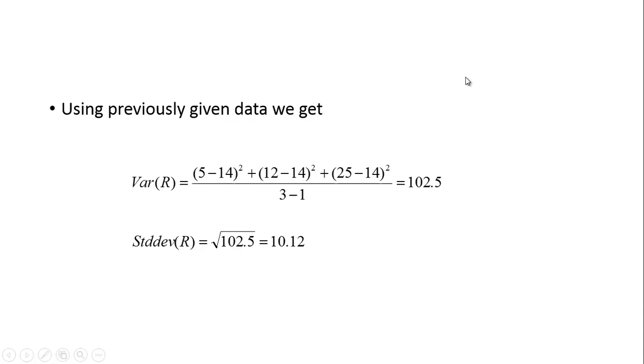Now using the previous data, we calculated the expected return to be 14%. The first observation was 5, so 5 minus 14 squared plus 12 minus 14 squared plus 25 minus 14 squared, all divided by 3 minus 1, and we get 102.5. If we take the square root of this, we get the standard deviation is 10.12.